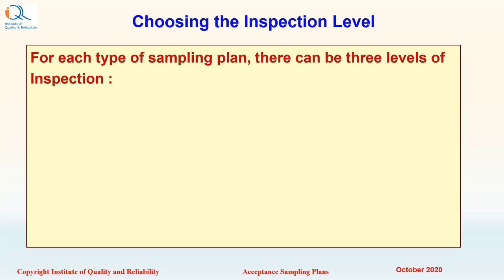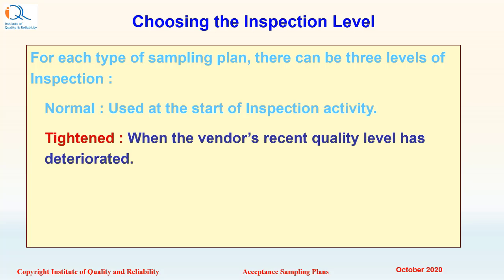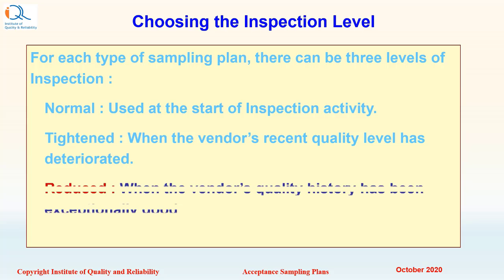For each type of sampling plan, there can be three levels of inspection: Normal, used at the start of inspection activity; Tightened, when the vendor's recent quality level has deteriorated; and Reduced sampling plans, when the vendor's history has been exceptionally good.